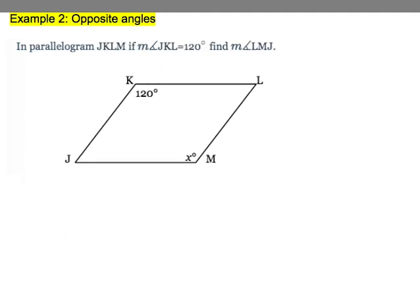Let's look at another example of parallelograms and angles. This example has opposite angles. You have parallelogram JKLM where angle JKL is equal to 120 and angle LMJ is unknown.